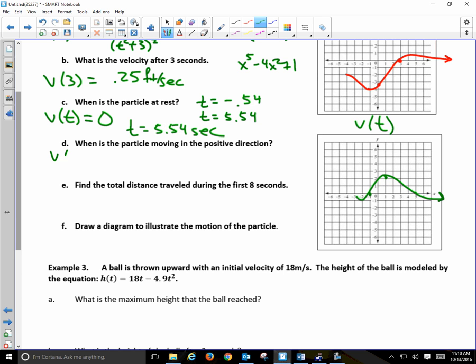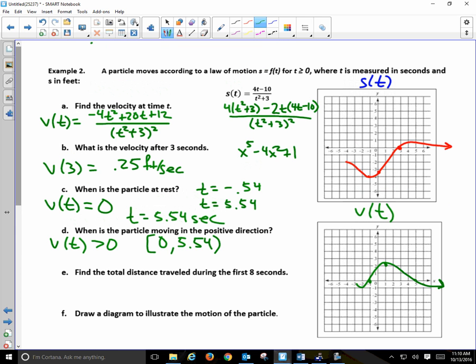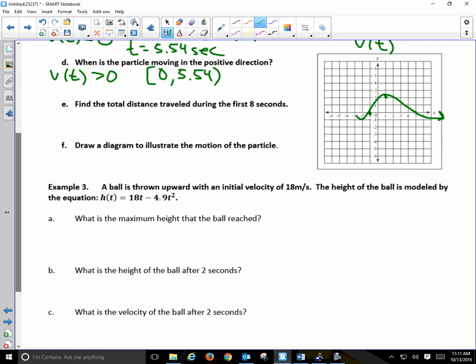So we've got it. Particle is at rest at time is equal to 5.54 seconds. Particle is moving in the positive direction when v of t is what? Greater than zero. When it is positive, when the graph of v of t is above the x-axis. When is v of t above the x-axis? We'll start at time equals zero. Is it above the x-axis at zero? Yep, so we'll start with zero. So when? 5.54. Because time will be positive. So for all of our answers, we'll restrict it so that we start with zero.